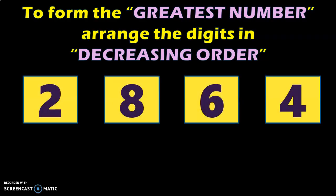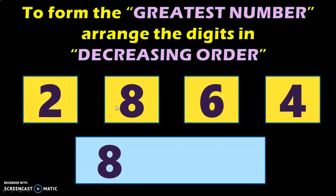Here we are given with four digits: 2, 8, 6 and 4. Now, to form the greatest four-digit number with these given four digits, we will have to arrange the numbers in decreasing order or from big to small. The biggest digit among the four given digits is 8. So first, write down the digit 8.